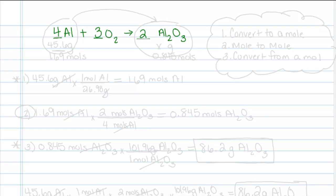All stoichiometry problems are going to involve three steps. Step one, convert to a mole. This is where you take what you are given and convert it to a mole. Step two is to do your mole to mole relationship from the balanced chemical equation. And step three is to convert from a mole.